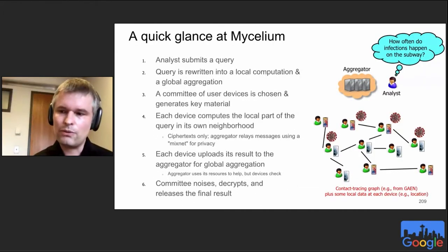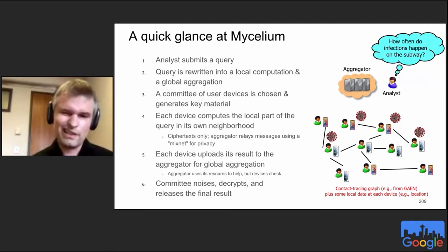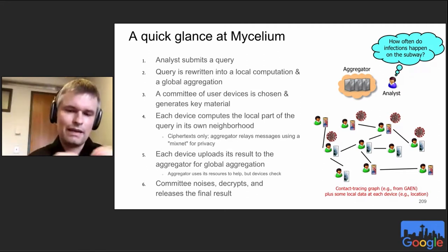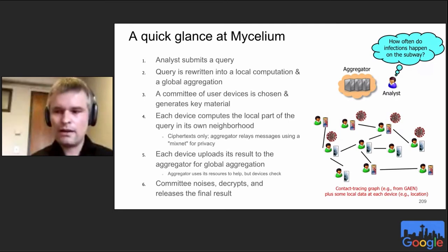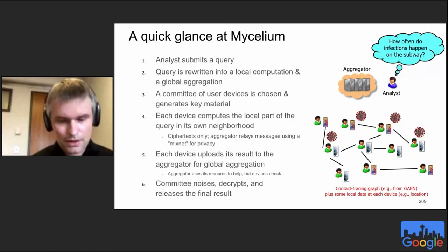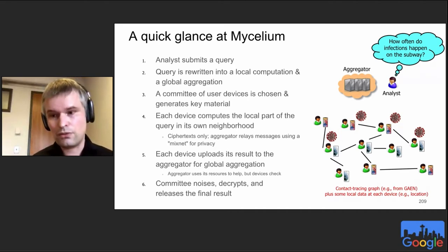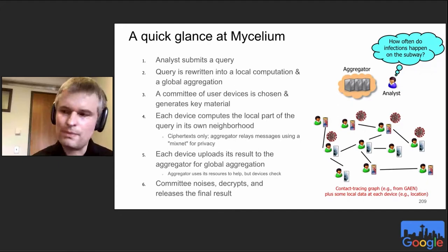In Mycelium, the analyst submits a query to our system. The system rewrites this query into one it can answer — one that has a global part and a local part. It then chooses a committee of user devices to generate the key material. Each user device executes the local part of the query with its direct neighbors in the graph. The aggregator acts as an intermediary to enable communication in a privacy-preserving way. In the second stage, each device uploads its intermediate result to the aggregator, which aggregates it, and then the committee noises the final result, decrypts it, and releases it.